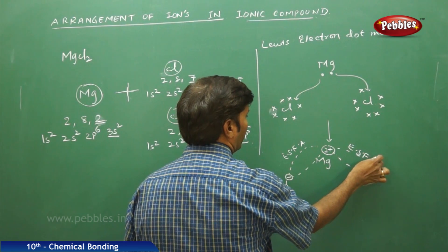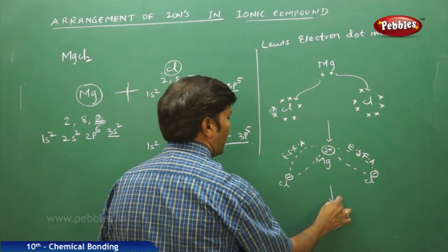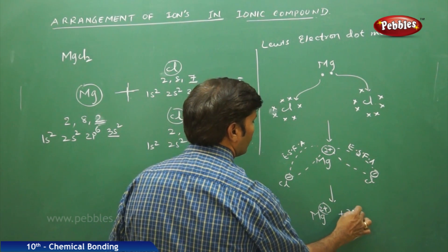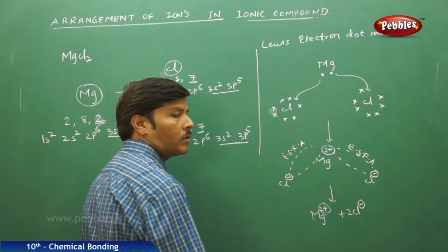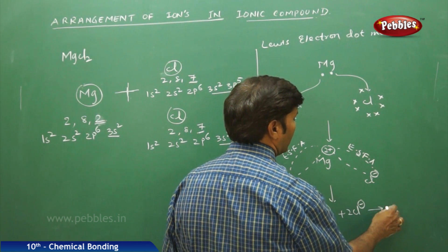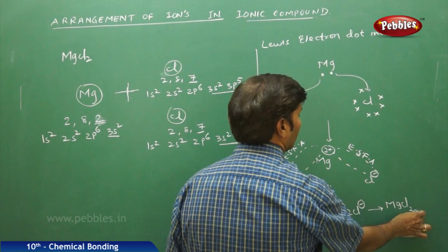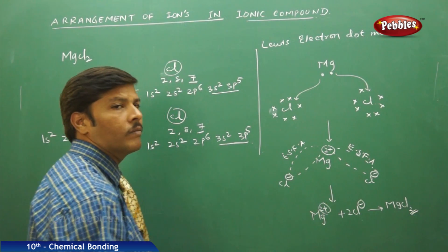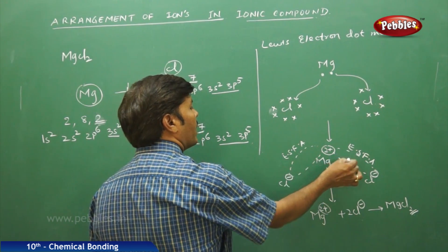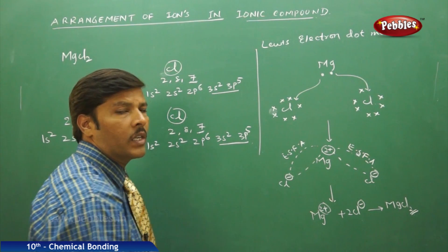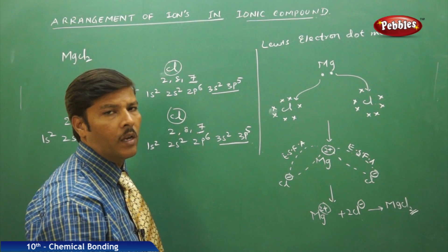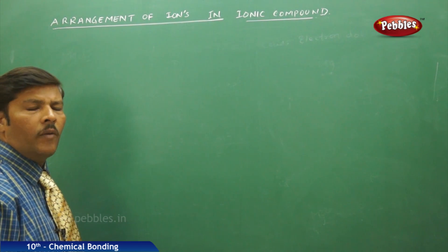Finally, Mg²⁺ plus two Cl⁻ ions — one magnesium carrying two positive charges and two chlorines each carrying one negative charge — results in the molecule MgCl₂. The strong electrostatic force of attraction operating between the magnesium cation and the two chloride anions is understood as the ionic bond, making MgCl₂ an ionic molecule.